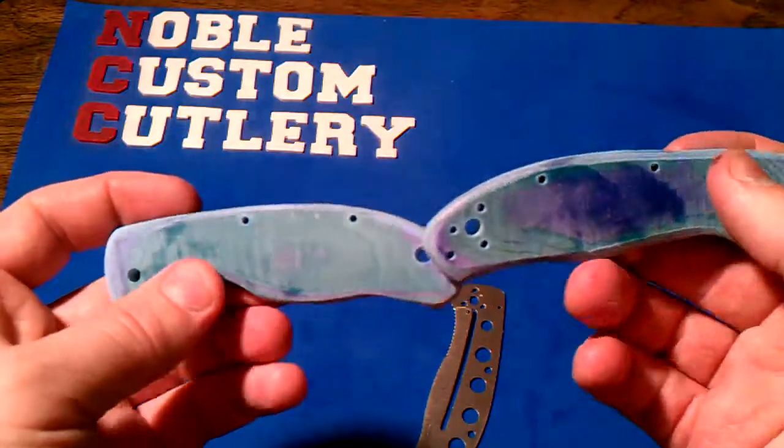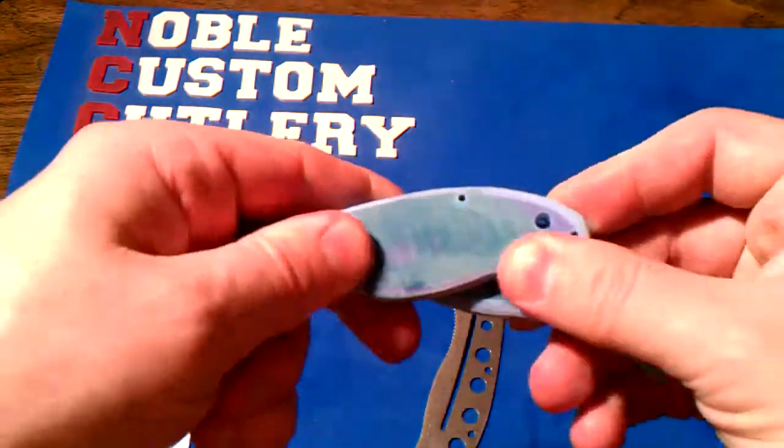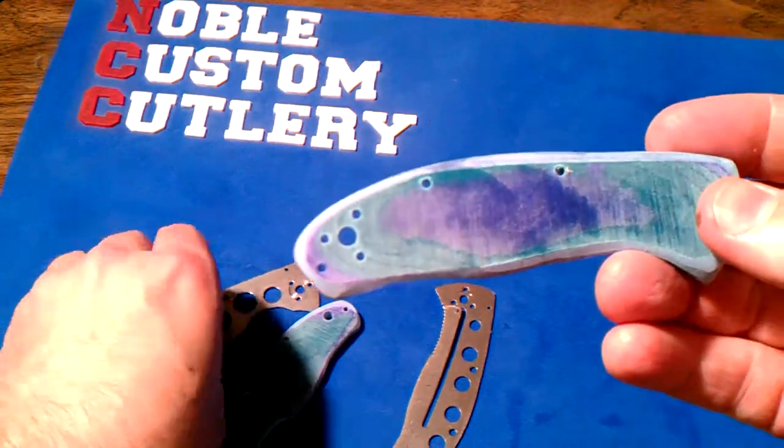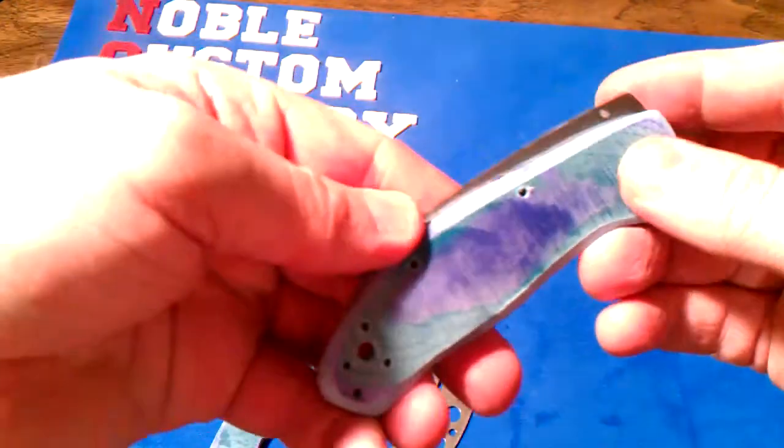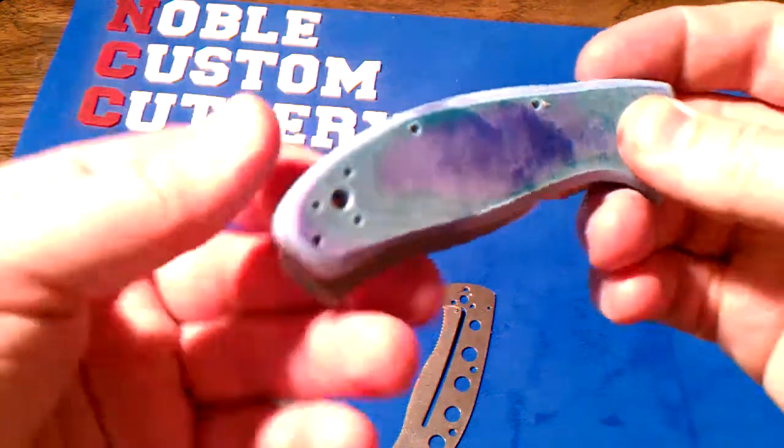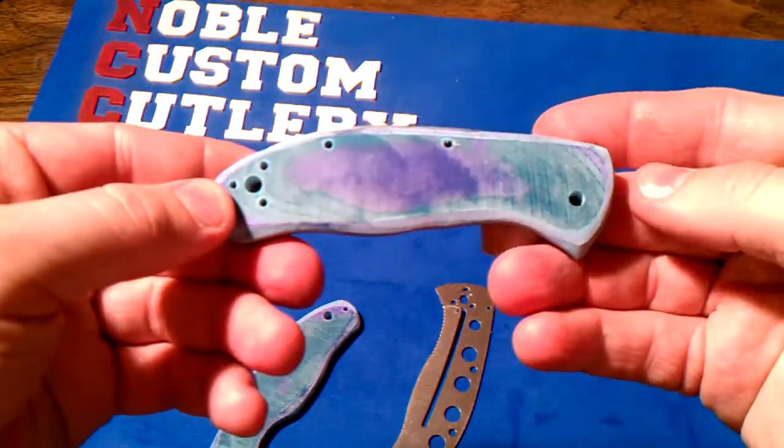I just really got a rough cut of the slabs, the scales together. I drilled the screw holes. I only put the clip holes on this side for how I carry it, tip up right hand. I'm only going to put those holes in it.